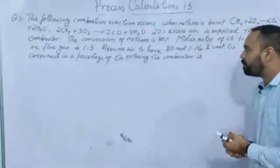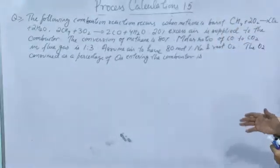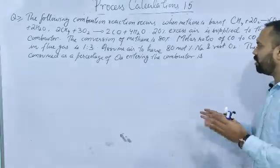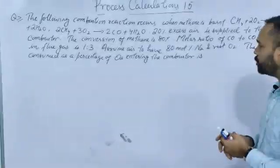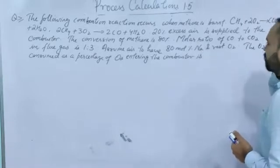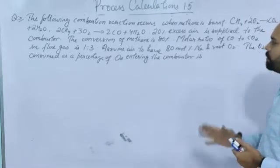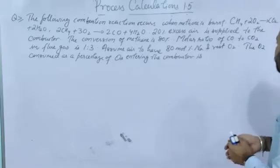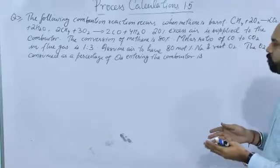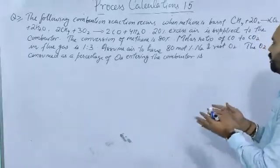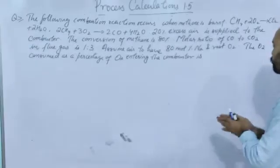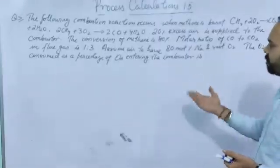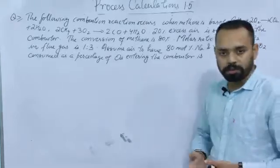The problem says the following combustion reaction occurs when methane is burned. Both reactions are given — complete as well as partial combustion. 20% excess air is supplied to the combustor. The conversion of the methane is 80%. The molar ratio of carbon monoxide to carbon dioxide in the flue gas is 1 to 3. Air has 80 mole percent nitrogen and rest oxygen. What is the O2 consumed as a percentage of O2 entering the combustor?